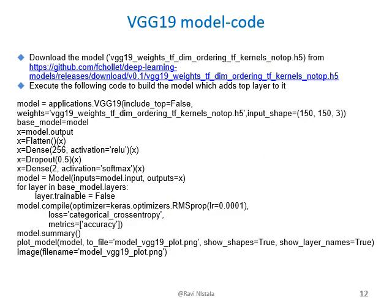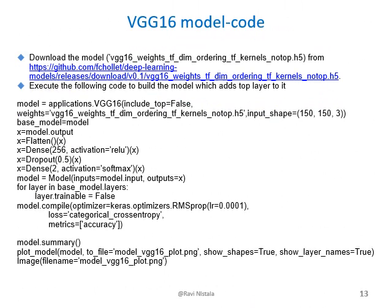This slide talks about the Keras pre-trained model VGG19. The location to download the model is provided. A new top layer was added to the existing VGG19 model. The next slide talks about VGG16, another Keras application pre-trained model. Similar to VGG19, a new top layer was also added to the VGG16 model.